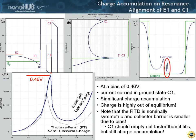The key element here is that this is a nominally symmetric RTD — it has become a little bit asymmetric because we applied a voltage, but still we have a lot of charge in here. Due to this asymmetry we would have thought that it empties out faster than it fills, but it still has a lot of charge.